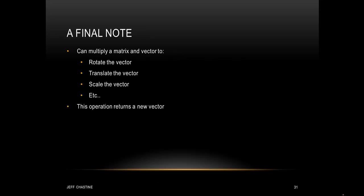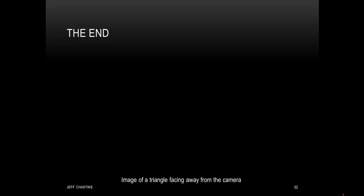One final note: we can multiply a matrix and a vector so that we can rotate, translate, and scale a vector. In other words, if I take a matrix and multiply it by an old vector, it gives me back a new vector that's been rotated, translated, or scaled. That brings us to the end of this tutorial. Hopefully you have a better understanding of what vectors are and some of the mathematical operations you can perform on them.